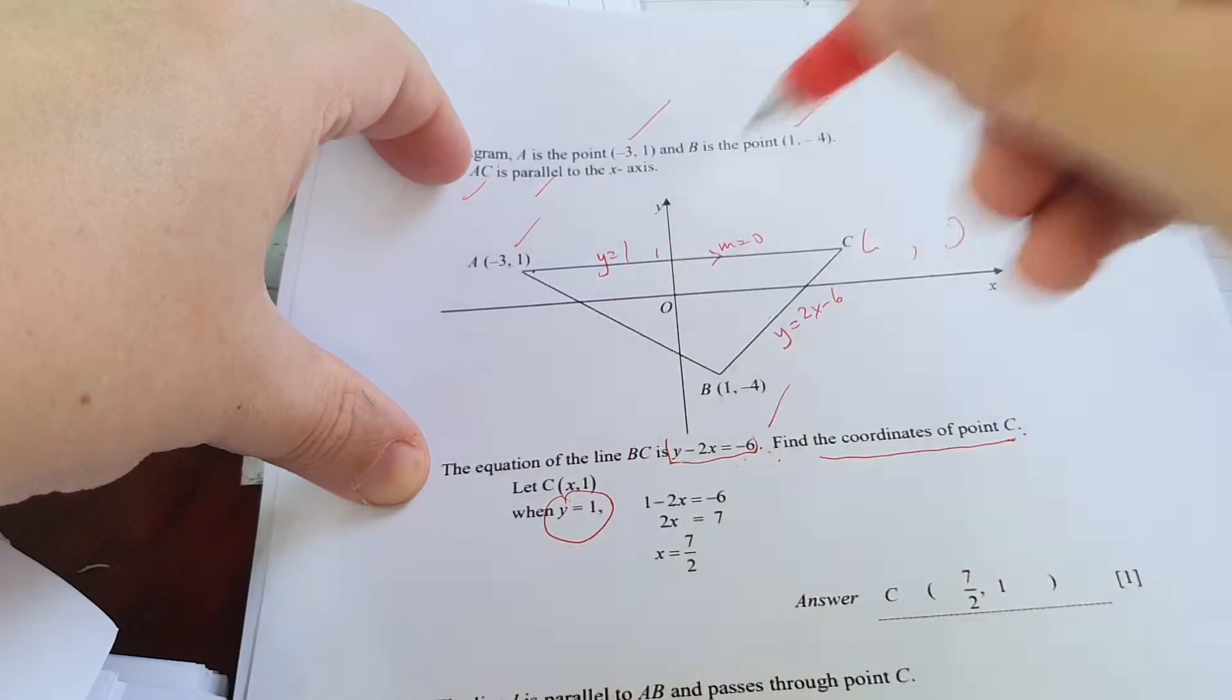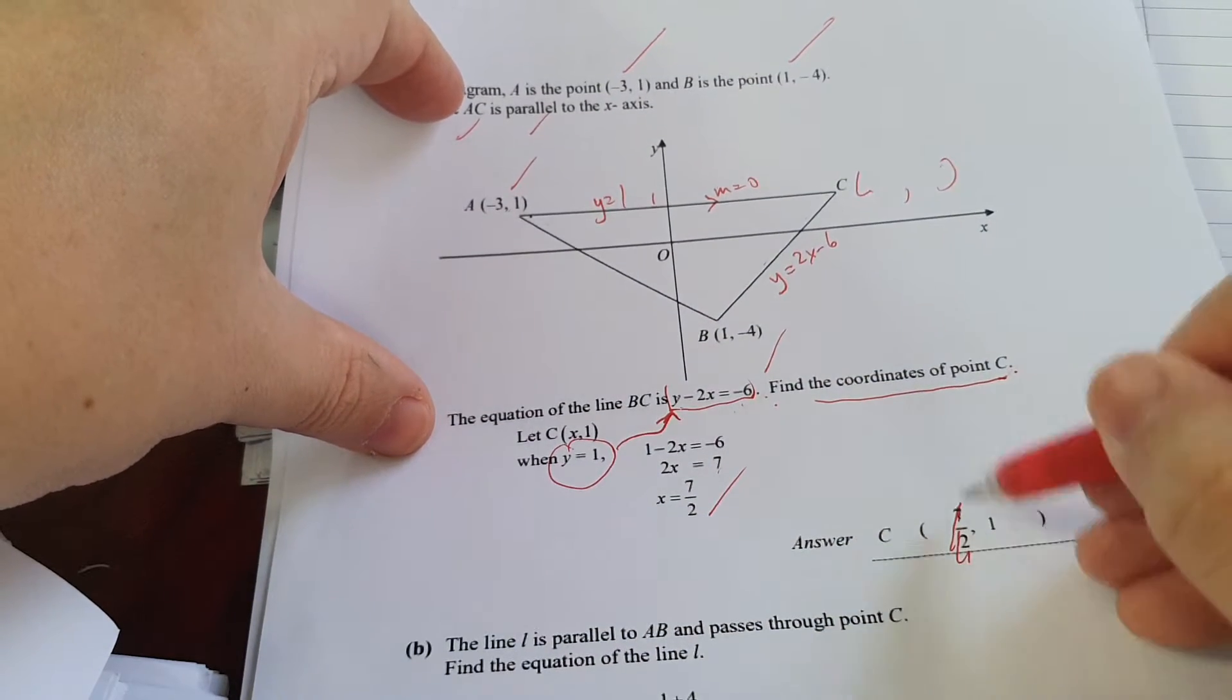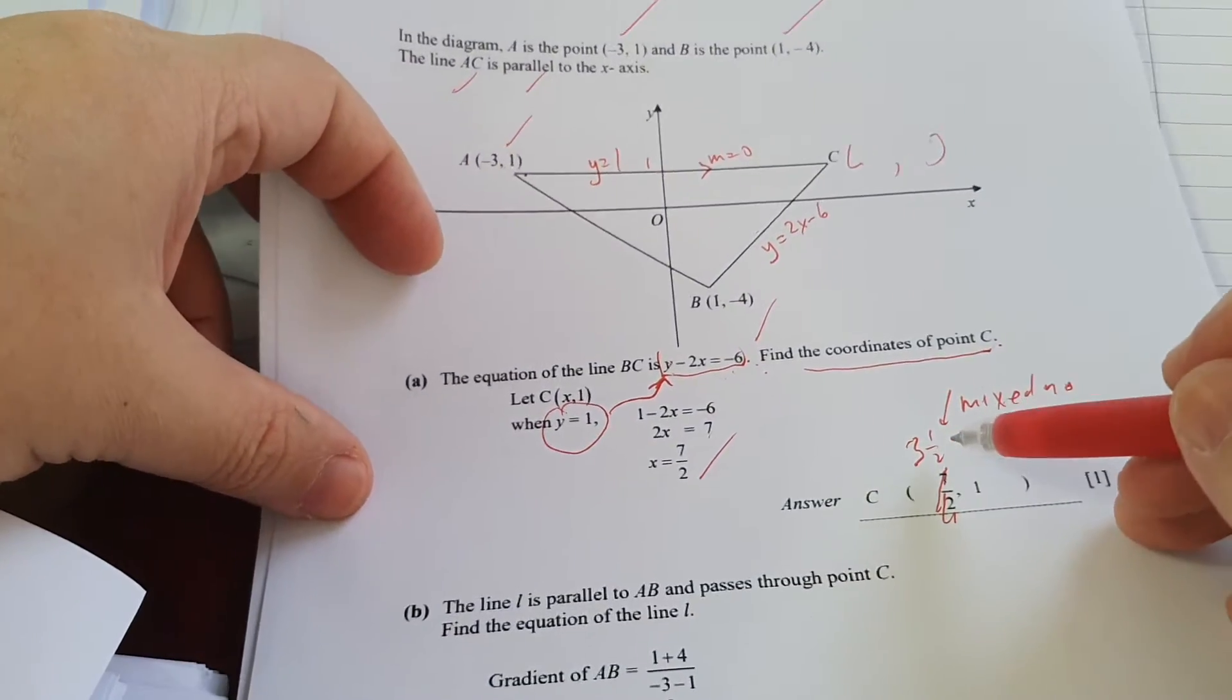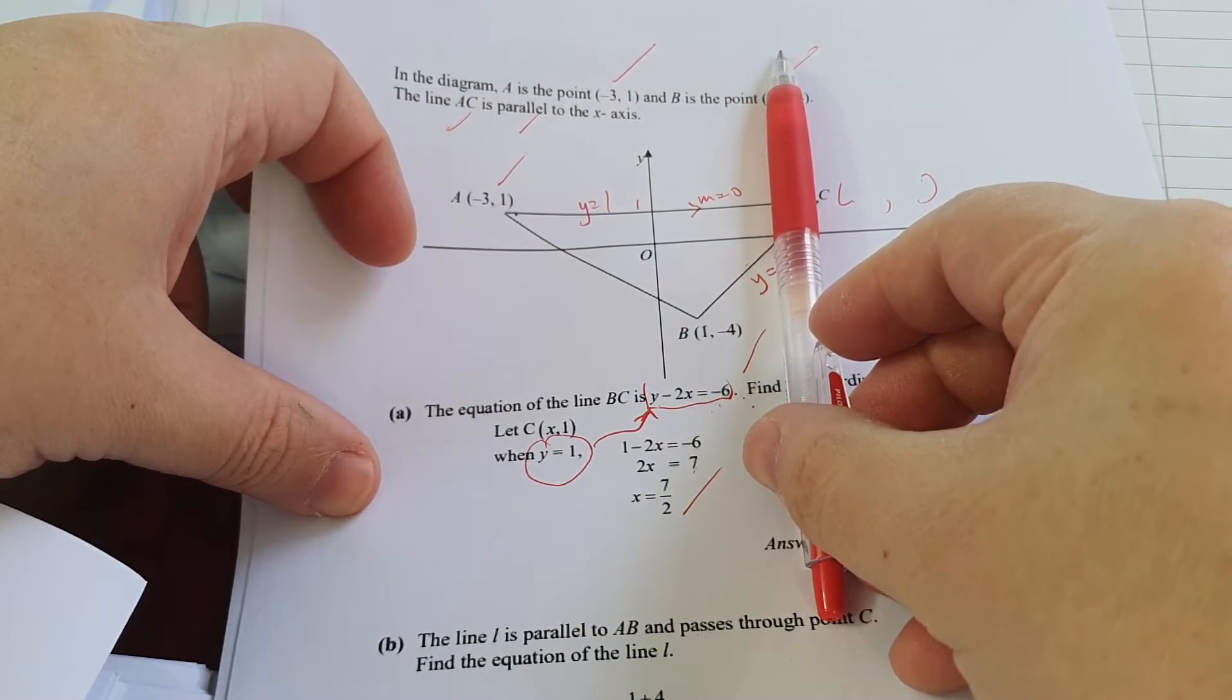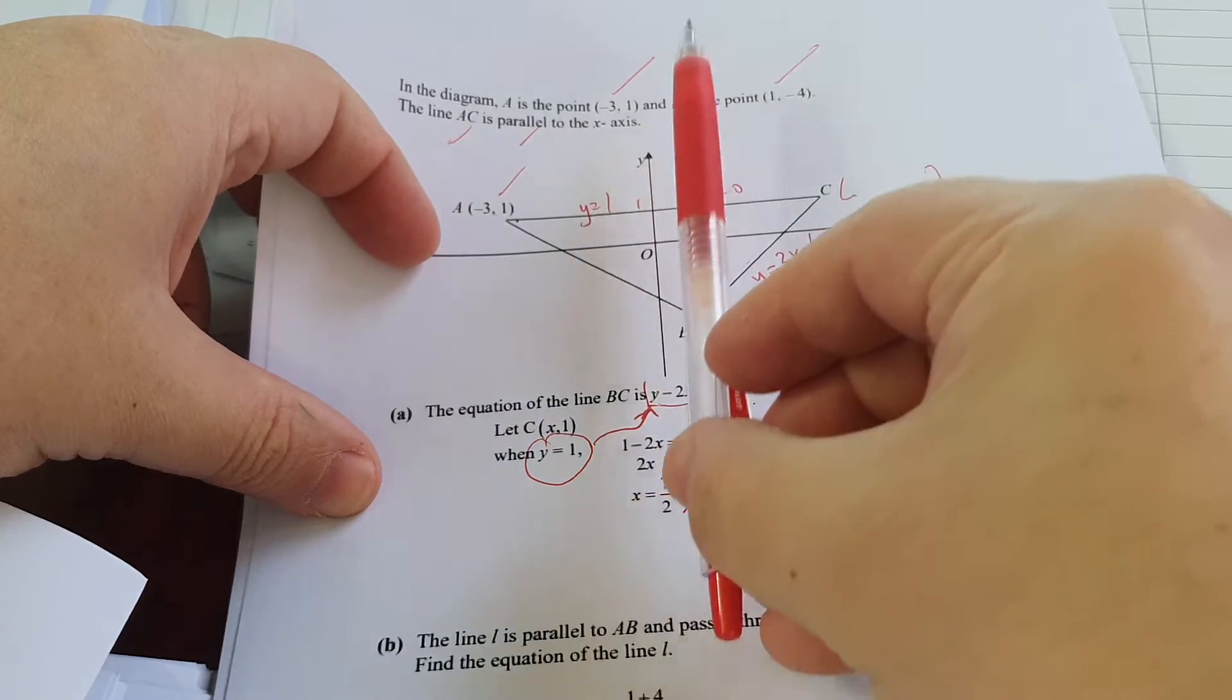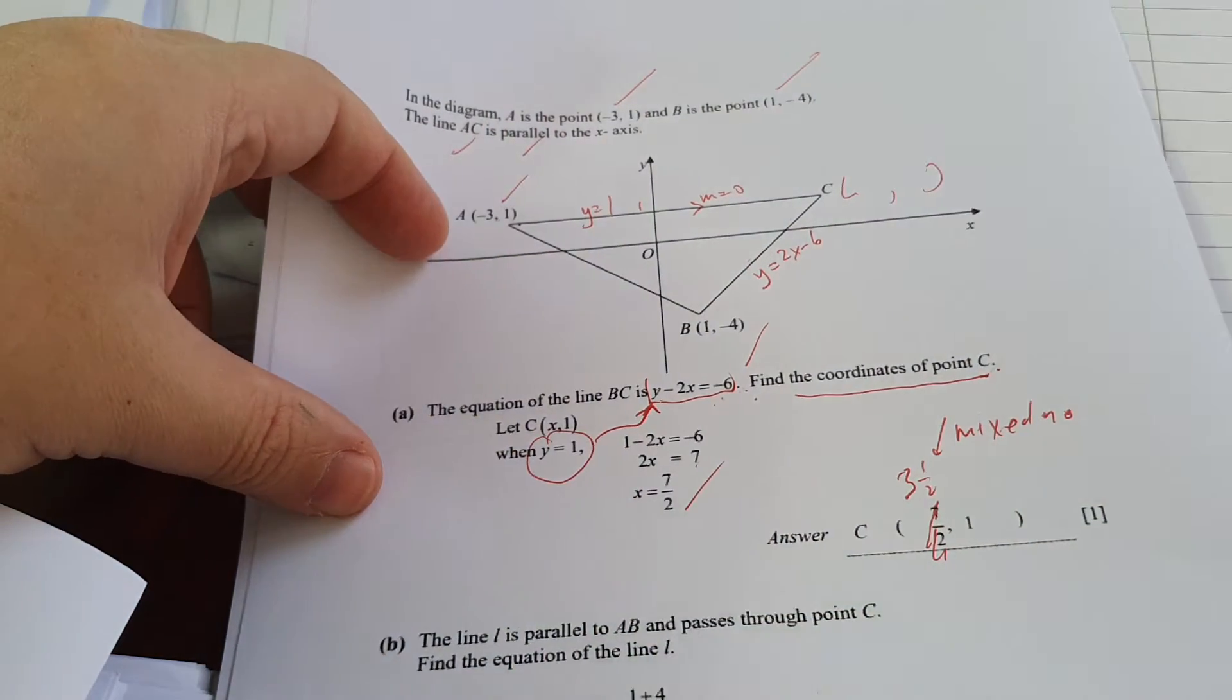So you sub Y equal 1, you sub inside here, then you can get an X value already. Leave this as 3 and a half, mixed number. So that's how you do the question, very simple. Similarly, any line that is vertical, for example, this vertical line passing through 1 minus 4, this equation of this line will be X equals to 1, this is X equals to minus 3. You need to know all this for E max, very simple one.